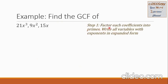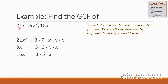In step 1, let us factor each coefficient into primes and write all variables with exponents in expanded form. So 21x cubed is factored into 3 times 7 — those are the prime factors of 21 — and x is written three times. For 9x squared, this equals 3 times 3 times x times x.